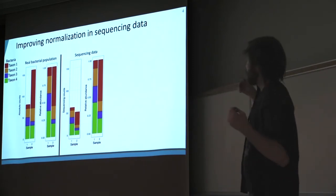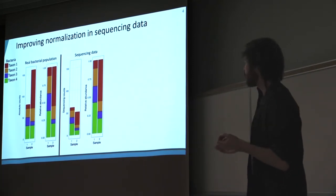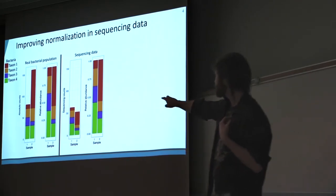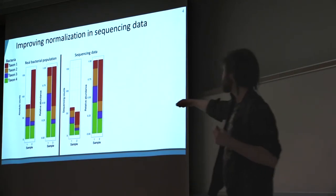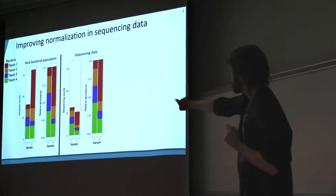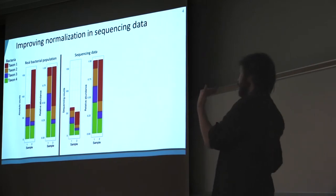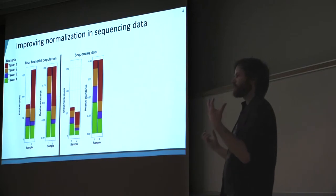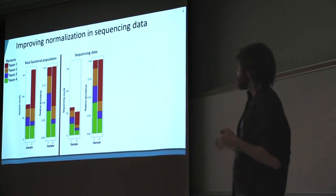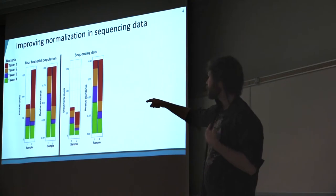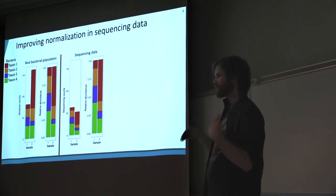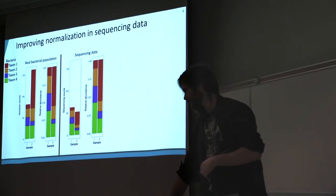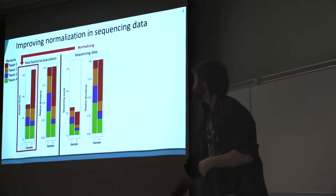The problem with analyzing just relative abundances is that it leads to spurious findings. For example, if I look at the green taxon shown on the bottom of the plot, it looks like it's gone down in sample two. I might think that's a good probiotic to give a disease patient. But if you look at the actual true abundances, both samples actually have the exact same number of bacteria. That would be a spurious finding from only analyzing relative abundance data — and it's for that reason that we need to normalize.